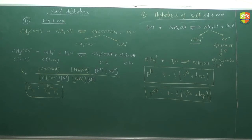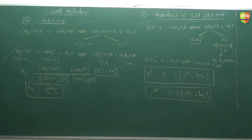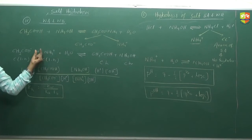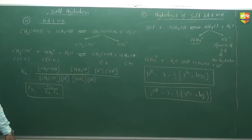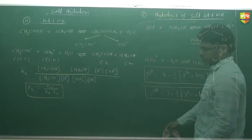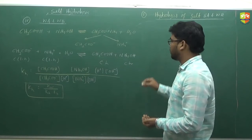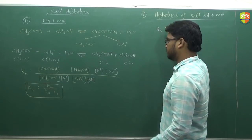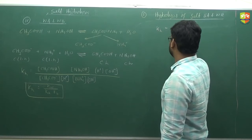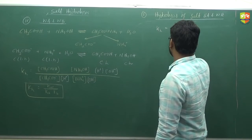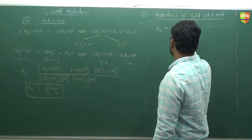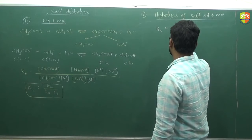This expression for KH equals Kw/(Ka·Kb) is the same as for strong acid and strong base salt, because the concentrations of NH4⁺ and CH3COO⁻ are the same. So that expression is the same and you can write it the same way.